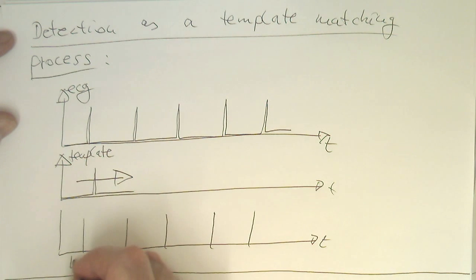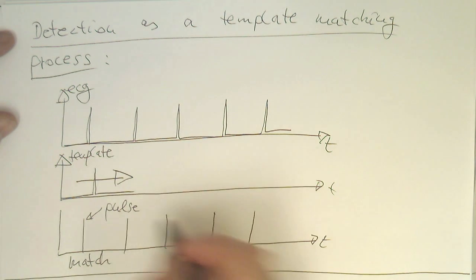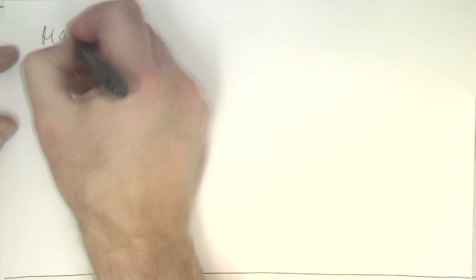There's a match, and then we are generating a pulse out of this. So, what is the matching process in terms of mathematics?